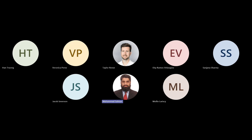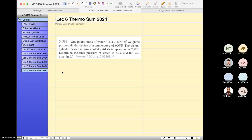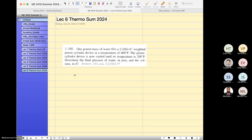Let us begin solving this question. This question states one pound mass of water fills 2.4264 feet cubed. This is the total volume of the container. For example, this is a container.